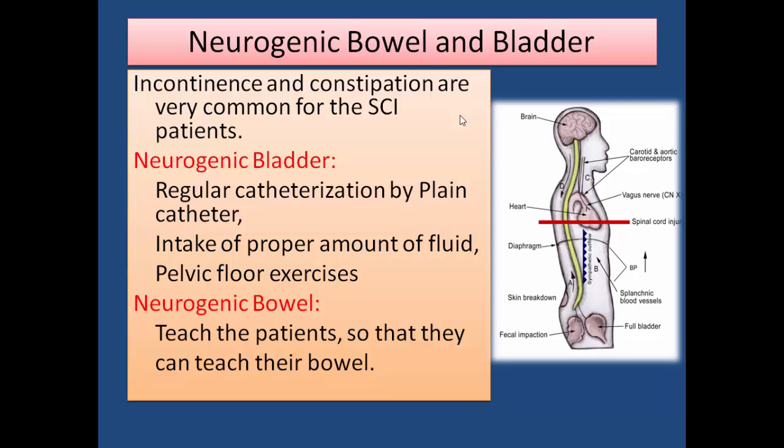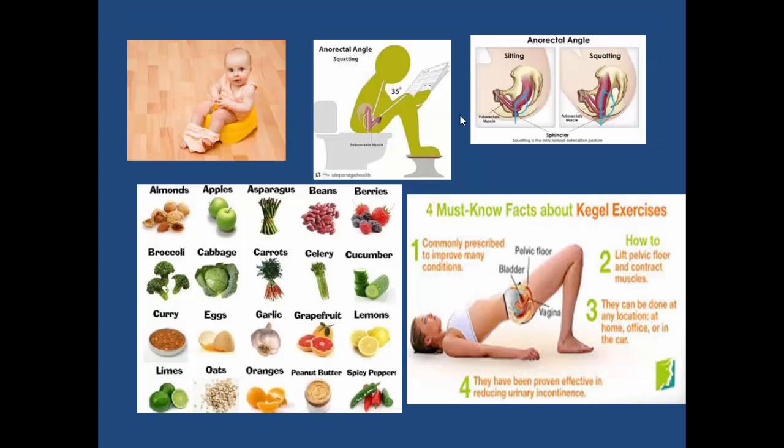Regarding neurogenic bladder and bowel: incontinence and constipation are very common for spinal cord injury patients. Regular catheterization with a plain catheter, proper fluid intake, and pelvic floor exercises can help prevent neurogenic bladder. For neurogenic bowel, teach patients to train their bowel — every morning attempt defecation, which we call 'pot defecation.'